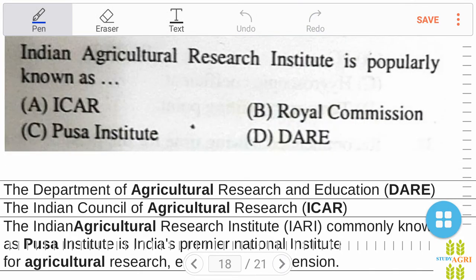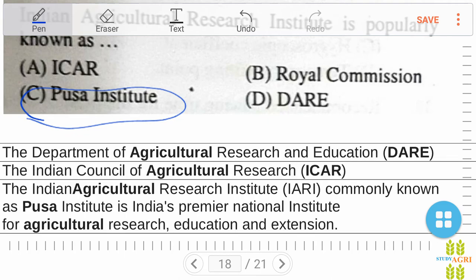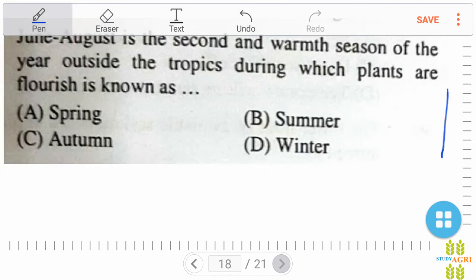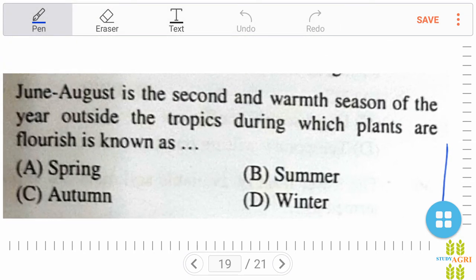Indian Agricultural Research Institute is popularly known as option C, Pusa Institute. DARE stands for the Department of Agricultural Research and Education, ICAR means Indian Council of Agricultural Research, and IARI, Indian Agricultural Research Institute, commonly known as Pusa Institute, is India's premier national institute for agricultural research, education, and extension. Next question: June to August is the second and warmest season of the year outside the tropics during which plants flourish, known as option B, summer.